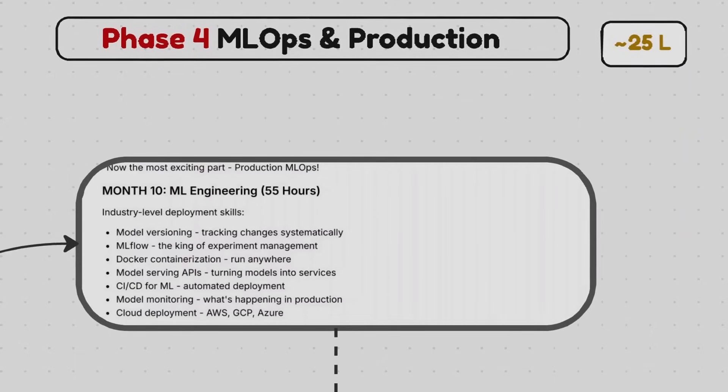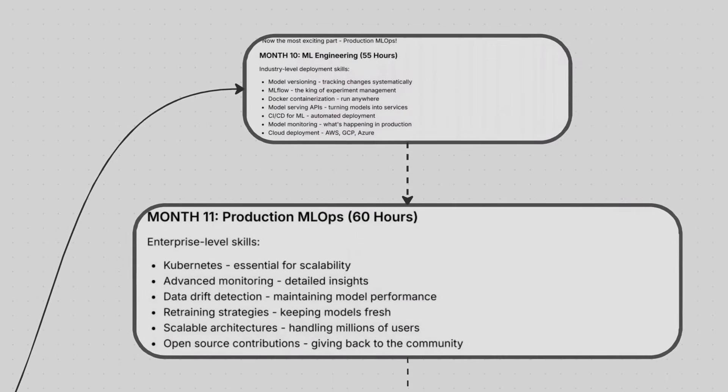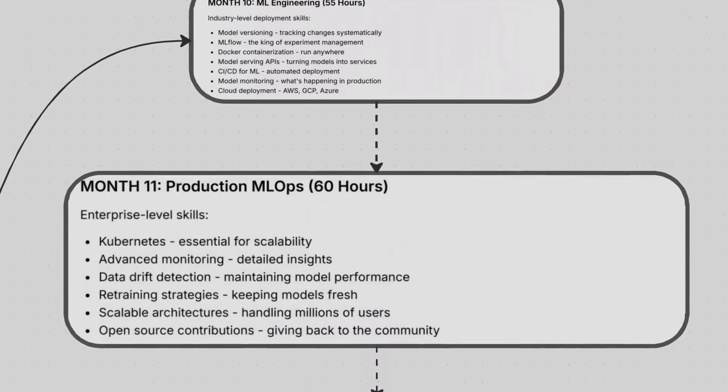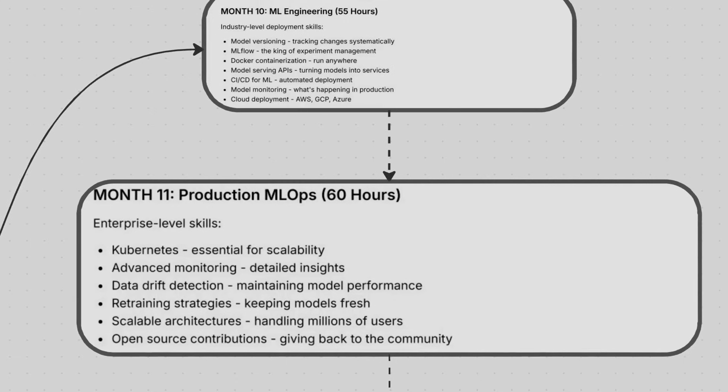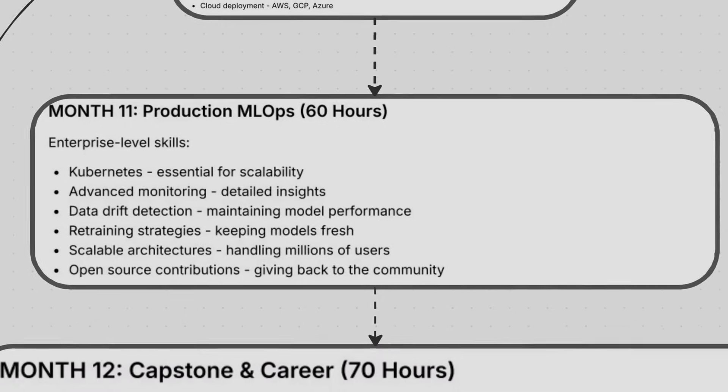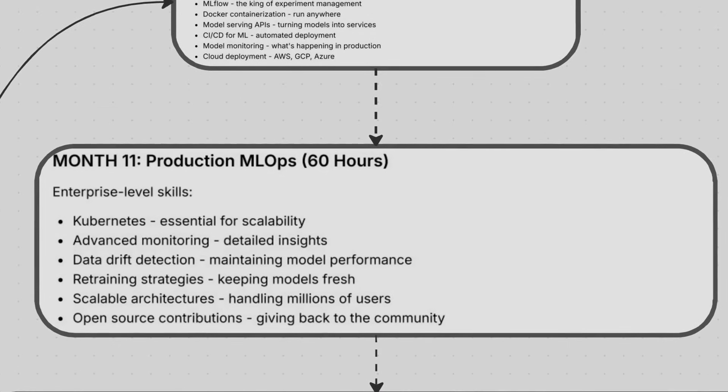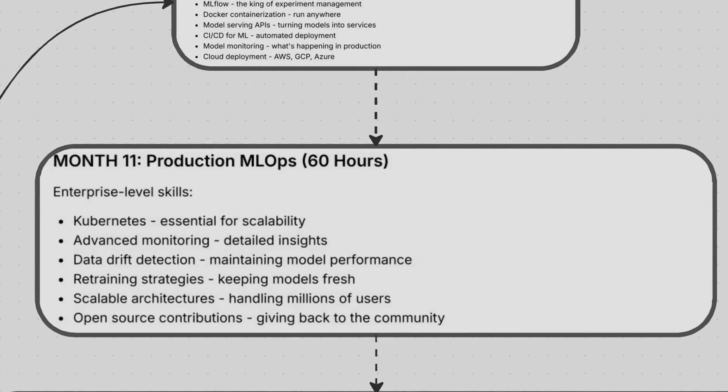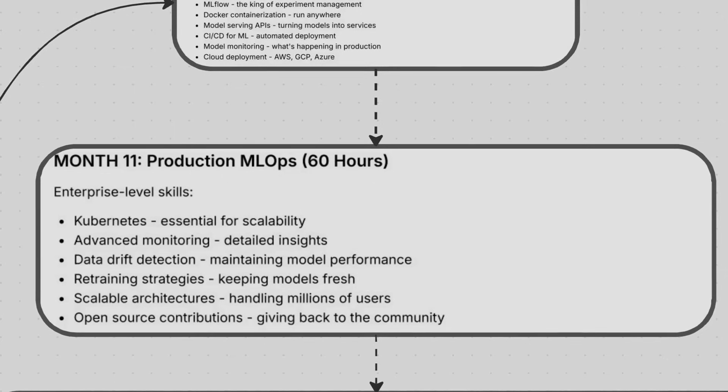Thereafter, we might talk about production MLOps, like enterprise-level skills like Kubernetes, data drift detection, and open source contribution. This point I would like to stop you, that while talking about open source, many students get confused that how can I do open source projects, how can I contribute to open source. So we'll see each and every point. This will be the industry-ready course for you, starting from very scratch, from your LinkedIn profile to taking you to 8 to 10 LPA or more than 10 LPA as a fresher. I'm guaranteeing this to you.